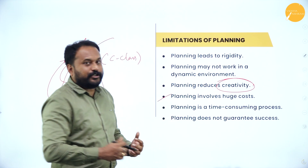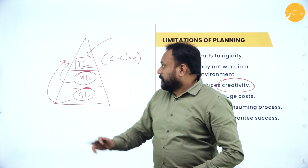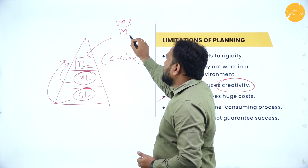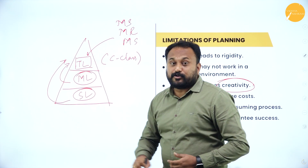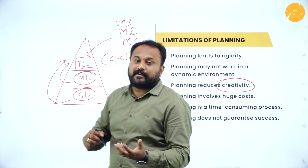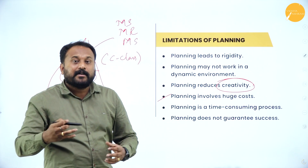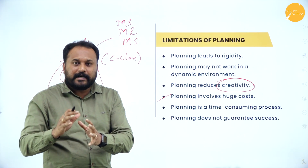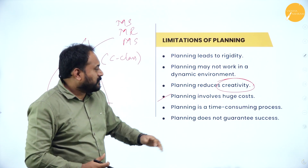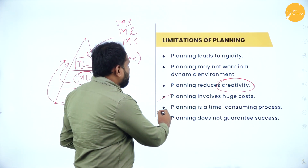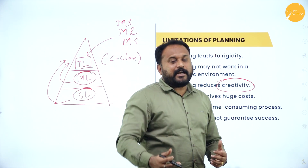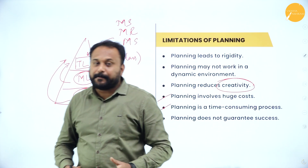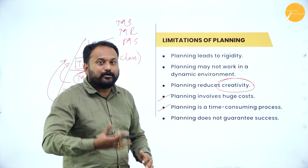Next, planning involves huge costs. The top level management will not plan just like that — they go with market research and market surveys, using statistical tools, collecting primary and secondary data. Strategic planning staff have very high salaries. So all of this means huge costs. Planning is also a time-consuming process — within a day you will not complete and deliver strategic plans. It is time-consuming because you need to do more research.